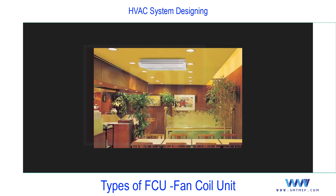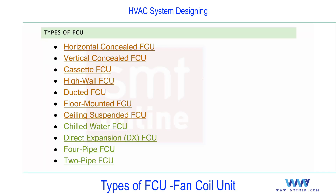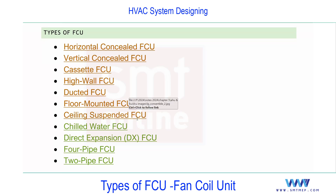The ceiling-suspended FCU is also very rare and almost outdated. It looks odd in most applications. The cassette FCU is the preferred ceiling-based option; the ceiling-suspended type is an alternative only when a cassette cannot be used and there is no wall space available, though it is not commonly found in practice.